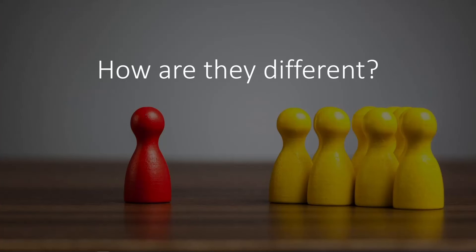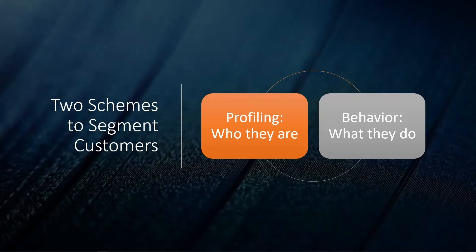Fundamentally, we want to answer the question: how are our customers different from each other? The schemes we use to segment customers can boil down to two big classes. First is profiling — we're trying to find out who the customers are, and we can come up with a description of what kind of people our customers are like. On the behavioral side, the focus is on what the customers do, or more precisely, what the customers did. Based on their browsing and purchase history, we know what they have done, so that becomes a good indicator of what they might do in the future.